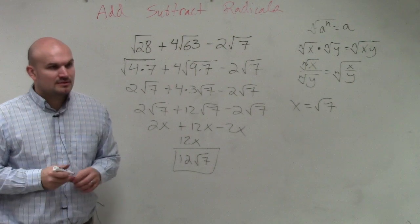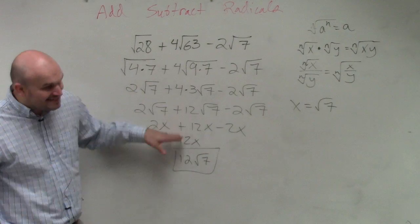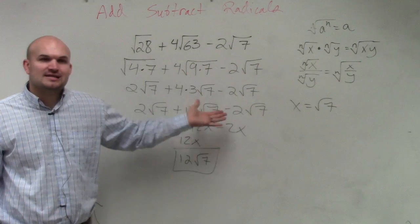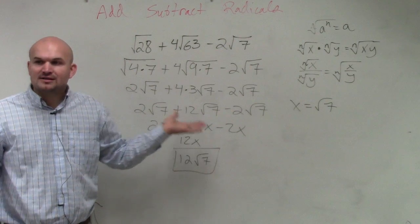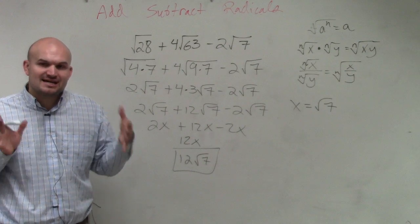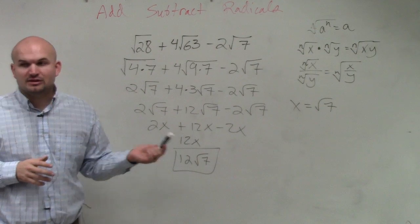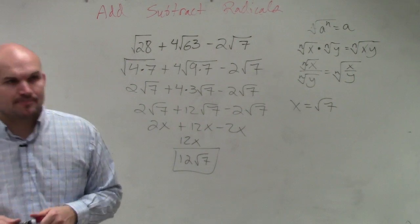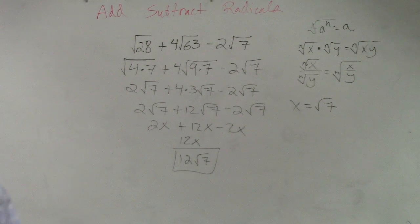OK. That's your final answer. As long as the index and the radicand are exactly the same, you just add and subtract the coefficients and you leave the radical exactly the same. Does that make sense? Any preguntas?